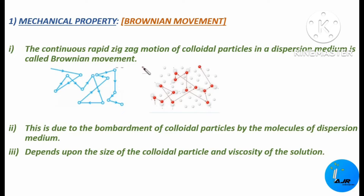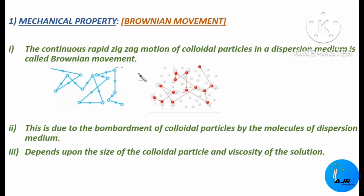Normally, colloidal sulfur will be undergoing Brownian motion. This Brownian motion is mainly due to the bombardment of the colloidal particles by molecules of the dispersion medium. For example, if a colloidal particle is dispersed in water, the colloidal particles will be bombarding with the water molecules. Because of that continuous bombardment, there will be continuous rapid zigzag motion of the colloidal particles.